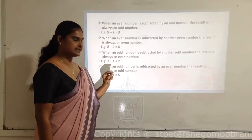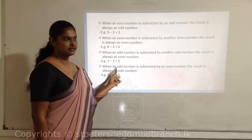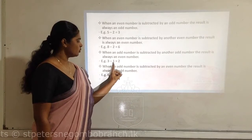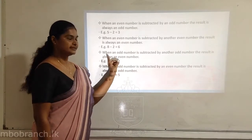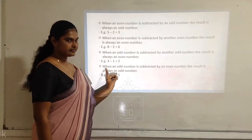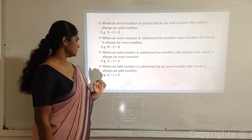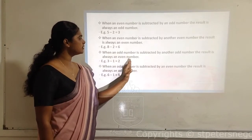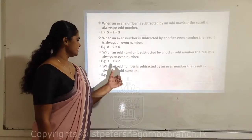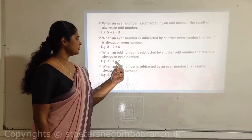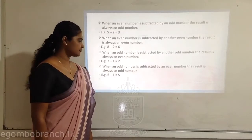Another simple example: 3 minus 1. If you subtract an odd number from another odd number, the answer would be an even number. When an odd number is subtracted by another odd number, the result is always an even number.